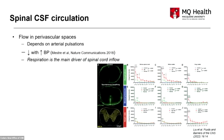We've shown that CSF flow into the perivascular spaces depends on pulsations, and that increasing blood pressure reduces flow into the perivascular spaces. In the spine, we have demonstrated in animal models that respiration is not only the most important determinant of CSF flow in the subarachnoid space, but is also the most important driver of CSF flow into the spinal cord parenchyma.